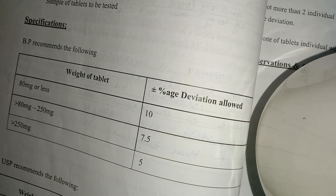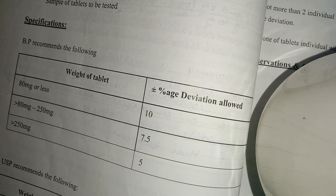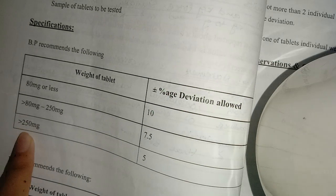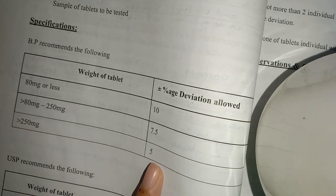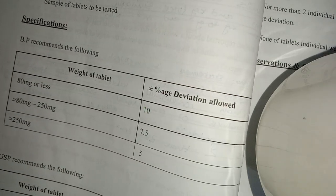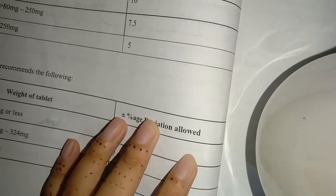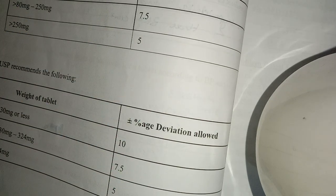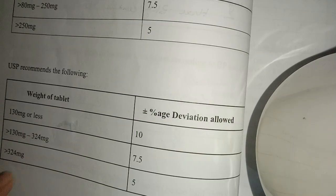For example, if we have weight variation of 2 plus 7.5, then 9.5 is allowed. You can see if it is more than 250mg, then the deviation is 5%. Now USP is different - it's 130mg, so it is 10%, 7.5%, or 5% the same, but the weight of the tablet is different.